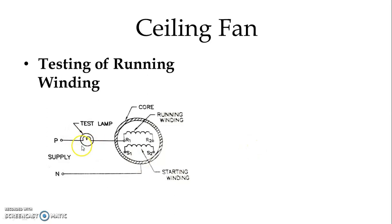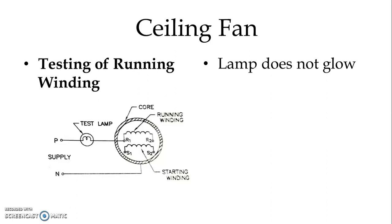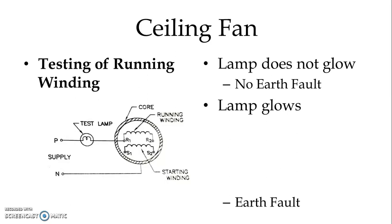For earth fault testing, we again use the test lamp. One lead is connected to the phase and the other lead is connected to one terminal of the running winding. The neutral is connected to the body of the motor. If the lamp does not glow, there is no earth fault — the circuit is incomplete and the running winding is not in contact with the body. If the lamp glows, there is an earth fault.